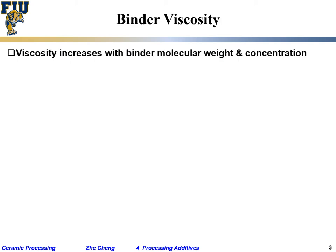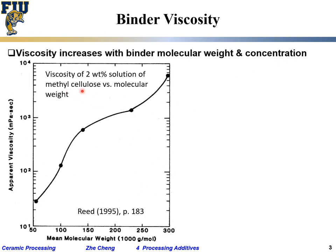Binder viscosity: binders are polymers, and when you dissolve a polymer into a solvent it causes a viscosity increase. Viscosity typically increases with binder molecular weight — the larger the binder molecules, the higher the viscosity. It also increases with concentration. Here we have a plot of methyl cellulose dissolved in water: at the same loading level of 2 wt% solution, as we increase the mean molecular weight, the apparent viscosity increases dramatically.